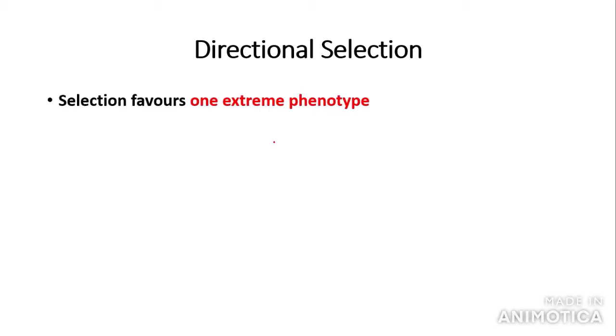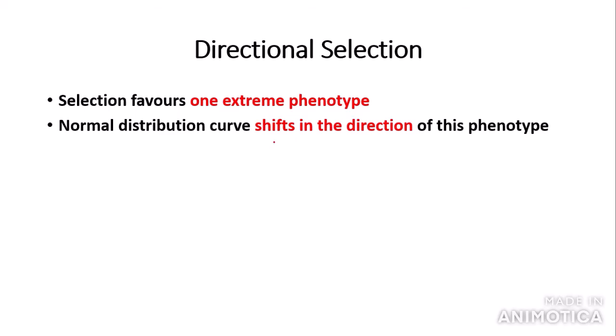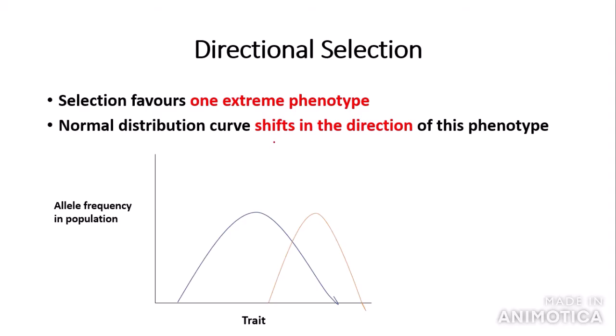Directional selection is when selection favours one extreme phenotype — a newly arisen phenotype, for example, the long neck in the giraffe. This means that the normal distribution curve shifts in the direction of this phenotype. The normal distribution curve is used to measure the allele frequency of particular traits. The blue curve represents the allele frequency before directional selection has taken place. In the centre we have the most frequent allele — with directional selection, this is the allele with the average phenotype, so a giraffe with a shorter neck.